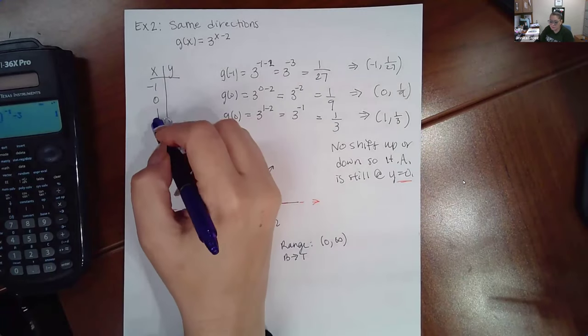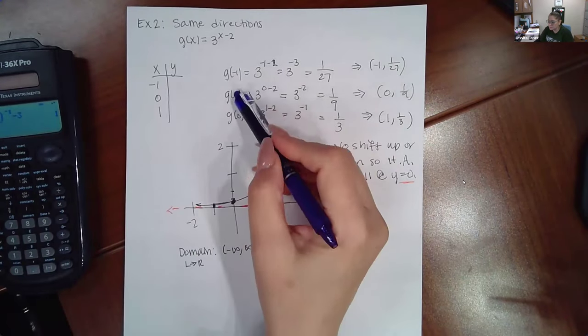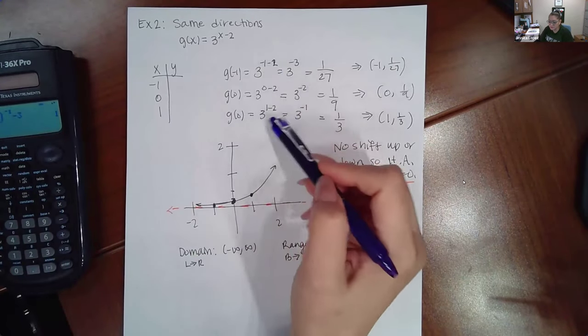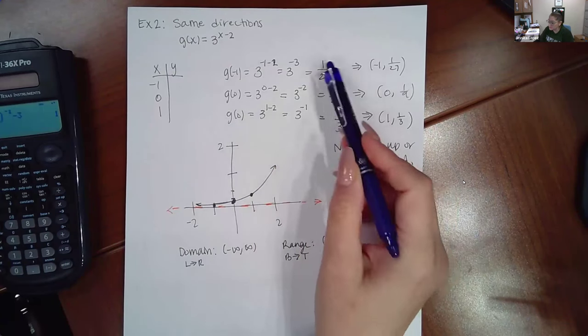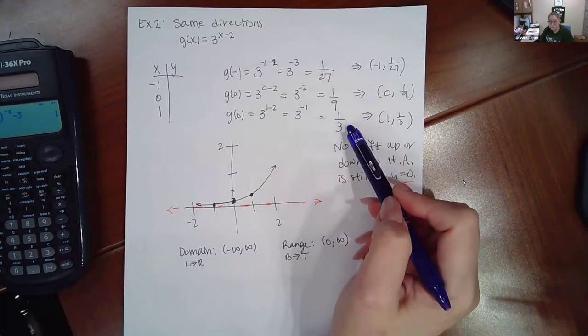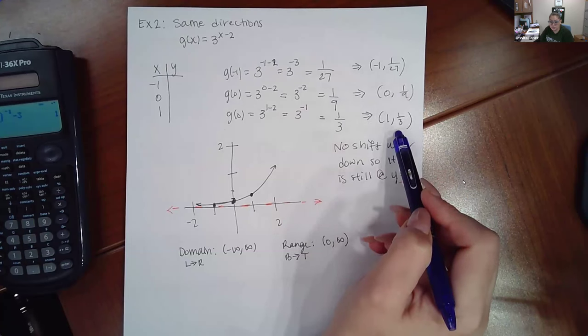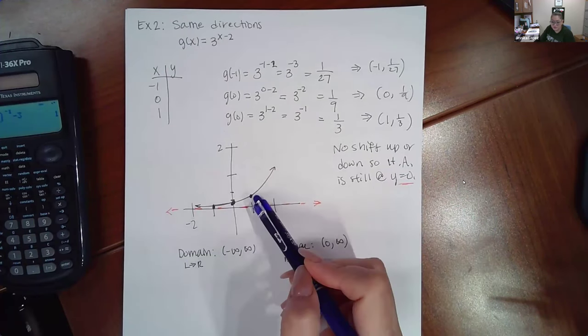Again I'm typing in these x values. I plugged all those into the function, typed everything in the calculator just as it was, and I ended up with these values here. I'm plotting these three points and those are the three points that you see there.